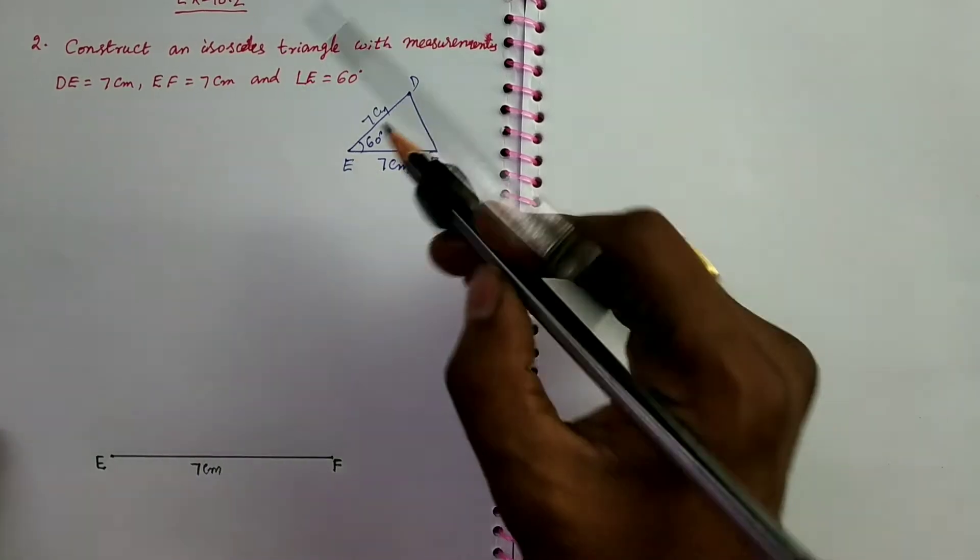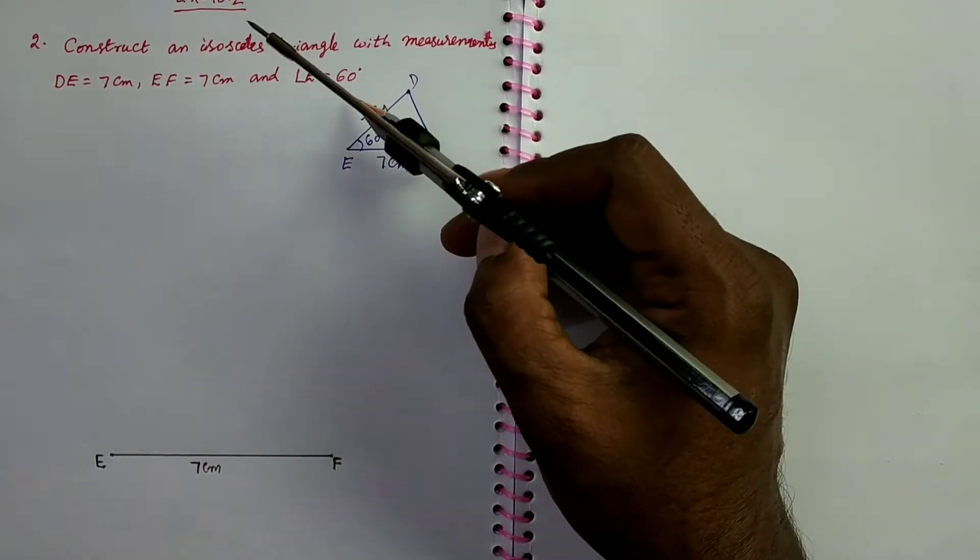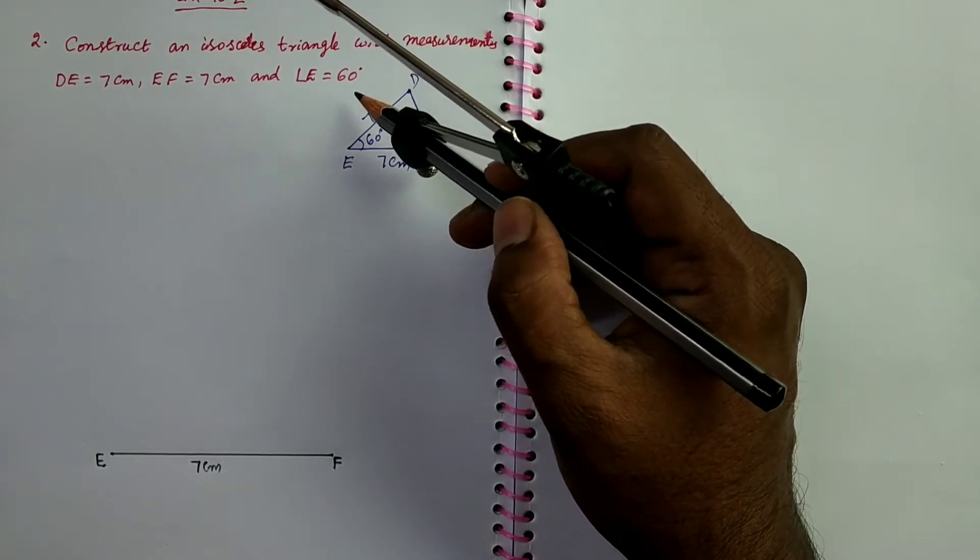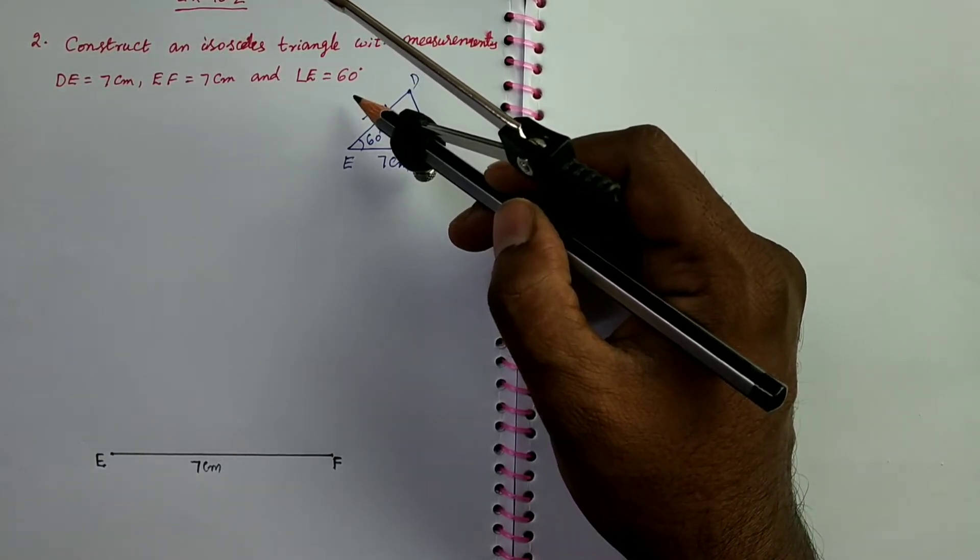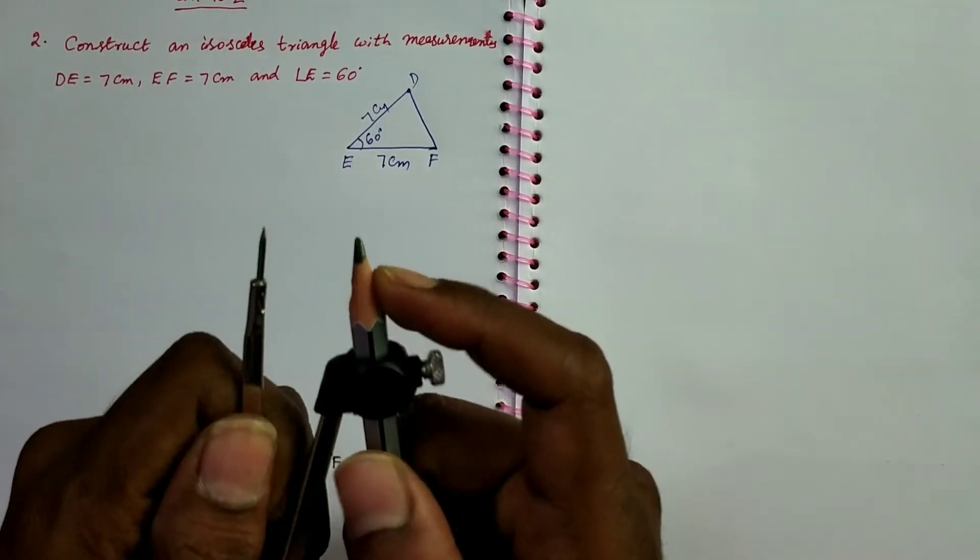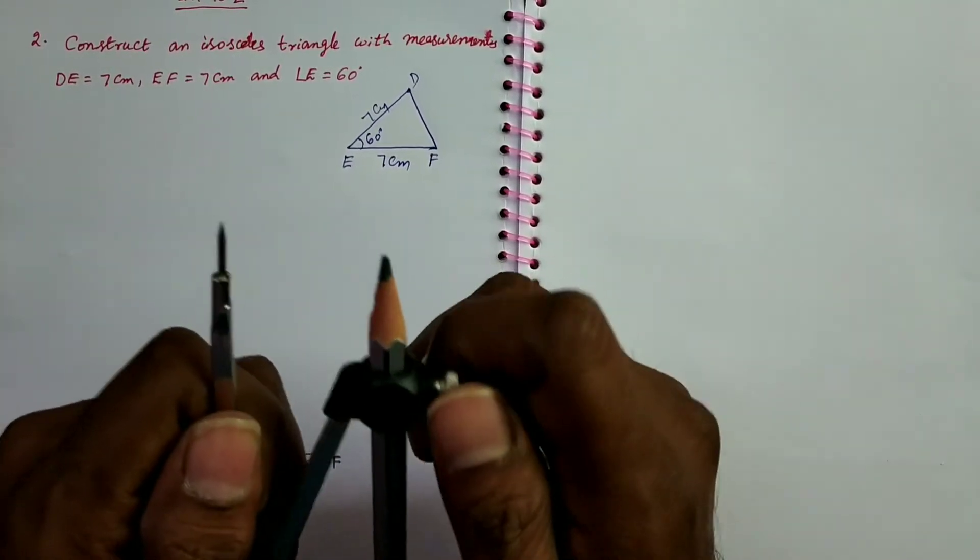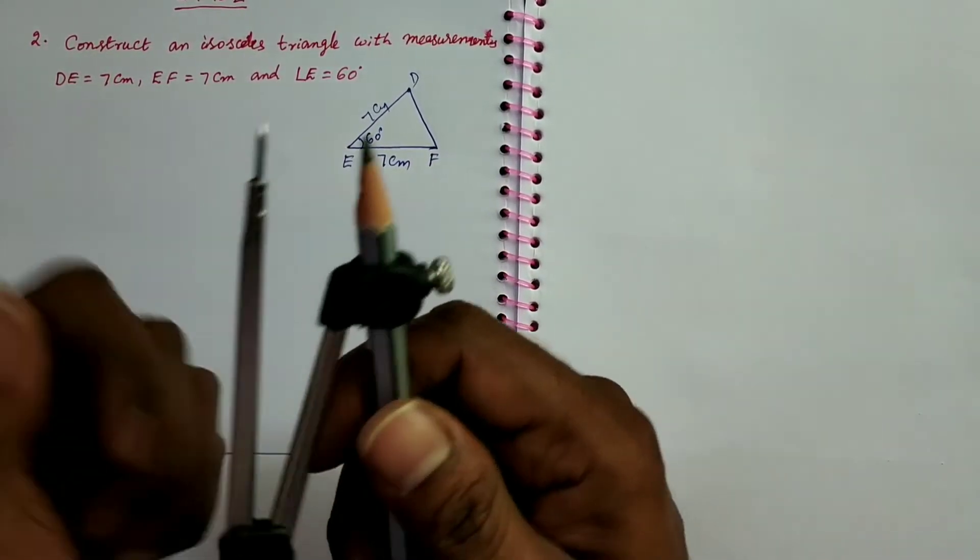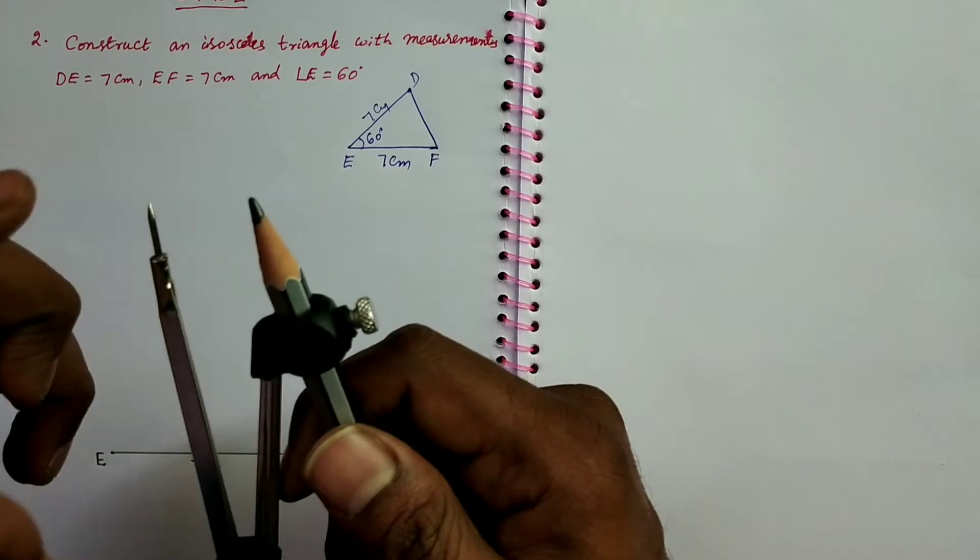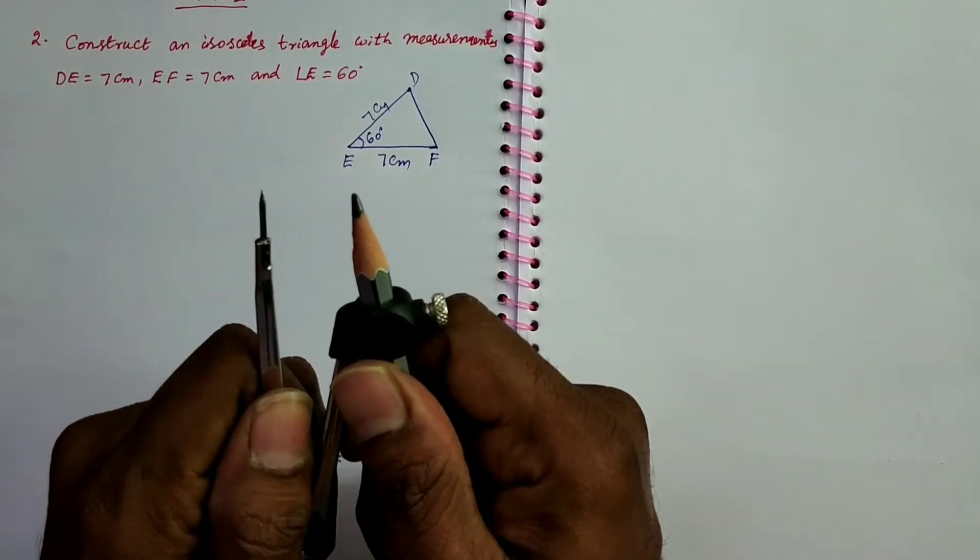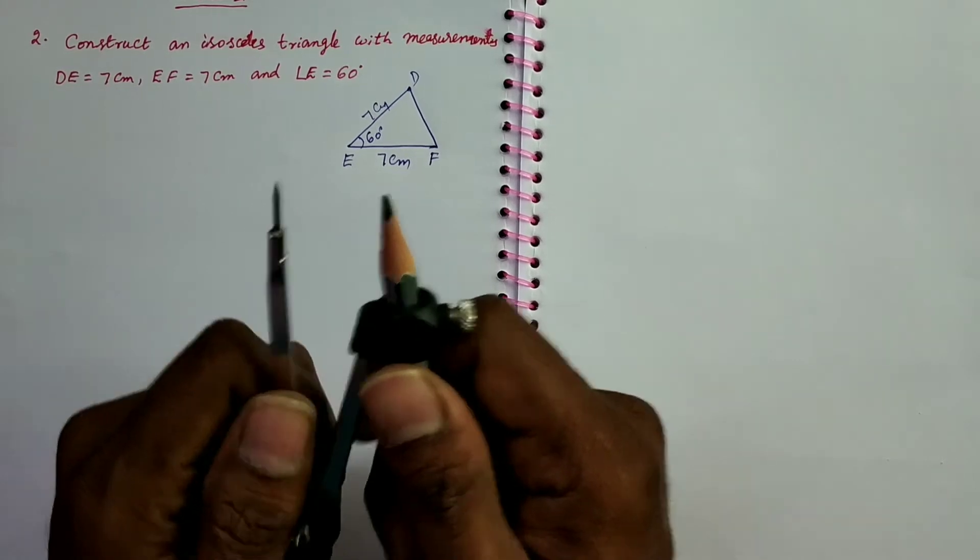Next we have to construct the angle 60. Angle 60 degrees is a standard angle, so we can construct 60 degrees without using protractor also. So how can we explain? Take a compass and a pencil, and keep a radius like this. This is the measurement called radius. Difference between the pencil and compass point. Take like this.